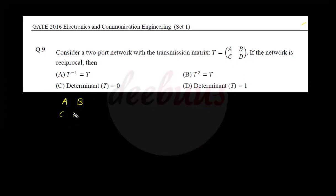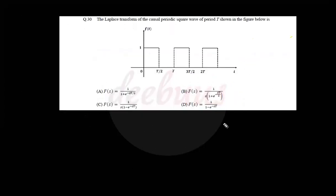For a reciprocal condition, the determinant of [A B; C D] equals one. Moving to the second question: the Laplace transform of the causal periodic square wave of period T shown in the figure.